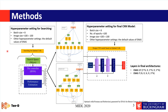We can divide the process into two parts. The first part is called the searching stage, where the controller searches for optimal cells. Then these cells are stacked together to design the final architecture, which is constructed by stacking the set of these cells.